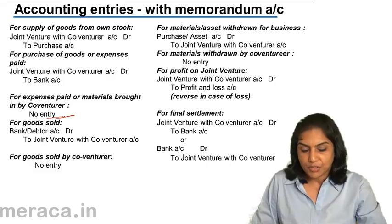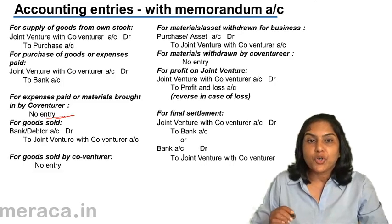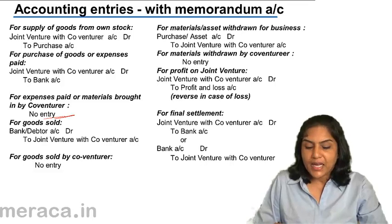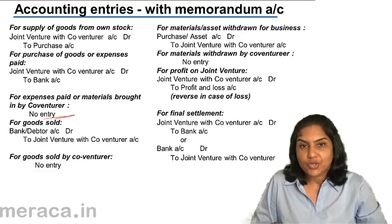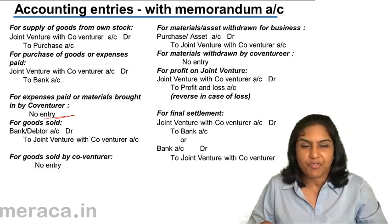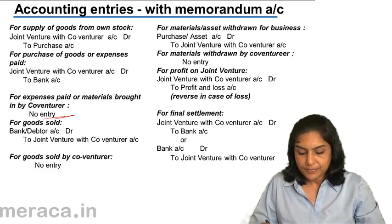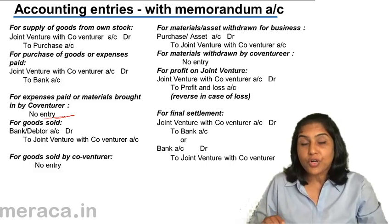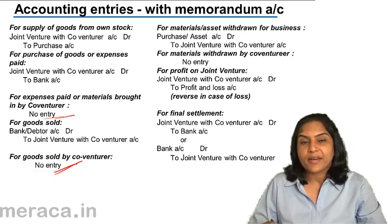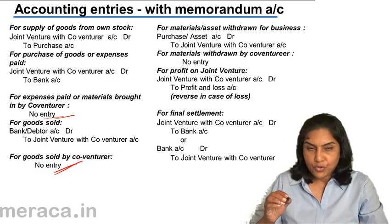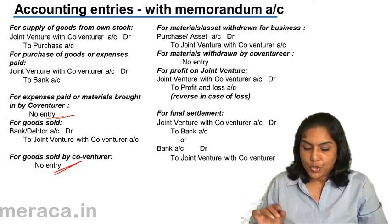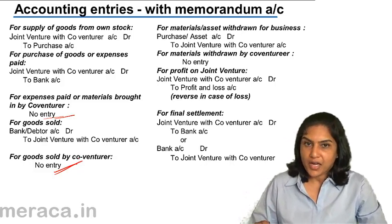If goods are sold and Akash receives the money, it's bank account debit to joint venture with co-venturer account — or debtor account if it is a credit sale. If goods are sold by the co-venturer Bikash and money is received by Bikash, there is no entry in the books of Akash.